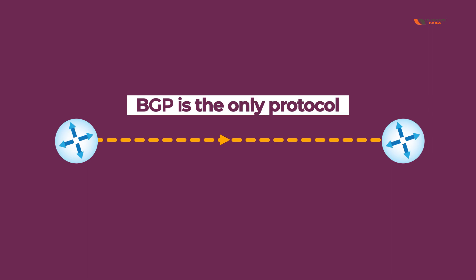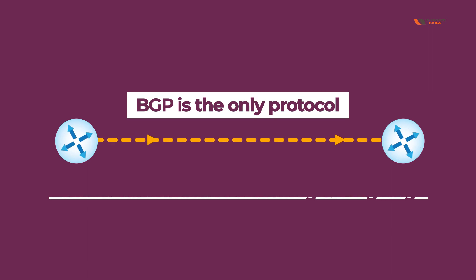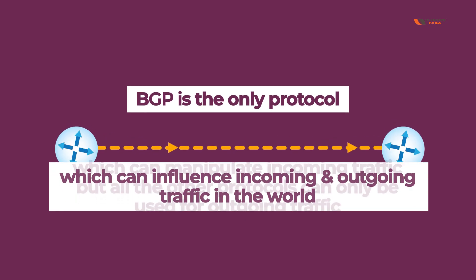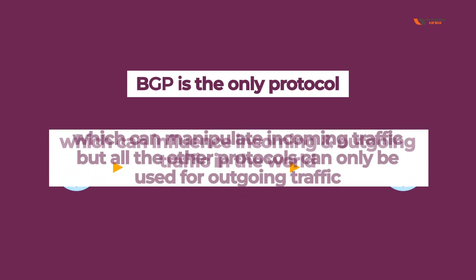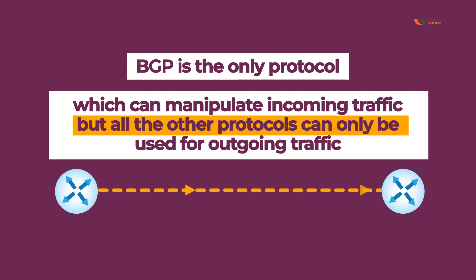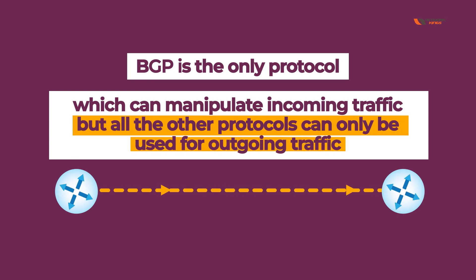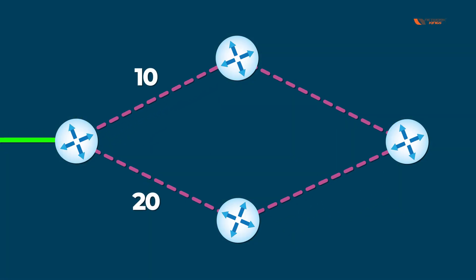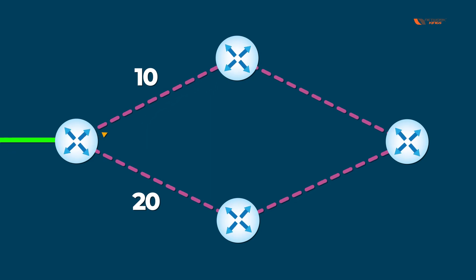BGP is the only protocol which can influence both incoming and outgoing traffic. All other protocols can only be used for outgoing traffic. For example, if you run OSPF, you can give a cost of 10 on one path and 20 on another, so OSPF will take the cost-10 path — meaning you can only influence outgoing traffic.